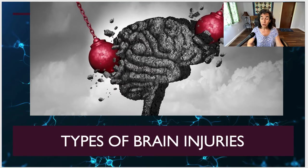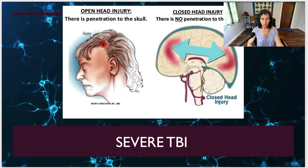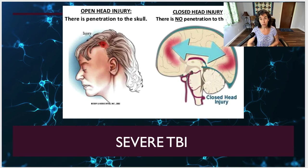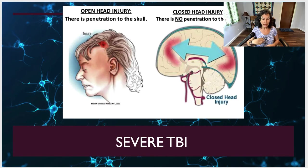Brain injuries are basically divided into open and closed head injury. With an open or penetrating head injury, there's an injury to the brain caused by a foreign object actually entering the skull — it might include being shot or being struck with a sharp object. Contrast that with a closed head injury, where there is no penetration of the skull, but it's caused by movement of the brain within the skull. It can be caused by a fall, motor vehicle accident, or being struck with an object that doesn't break through the skull and skin.